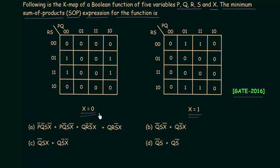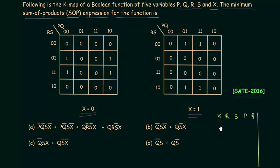X is the MSB and Q is the LSB for the given boolean function. X is the MSB because when we change X from 0 to 1, the change is significant. To understand the 5-variable kmap, you must first make the truth table for 5 variables. The variable order is X (MSB), then R, S, P, Q, and the output is Y.